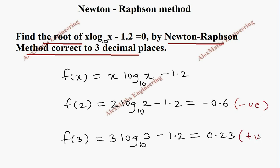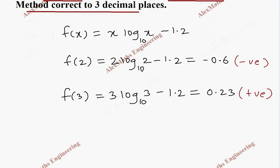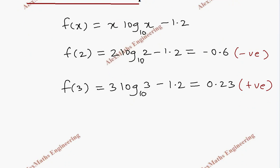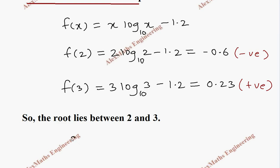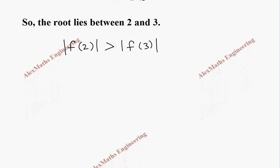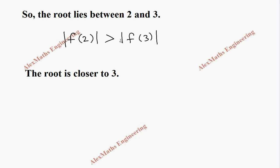We found the sign changed from negative to positive, so we can say the root lies between 2 and 3. The magnitude of f(2) is 0.6, which is greater than the magnitude of f(3) which is 0.23, so from this we can understand the root is closer to 3.